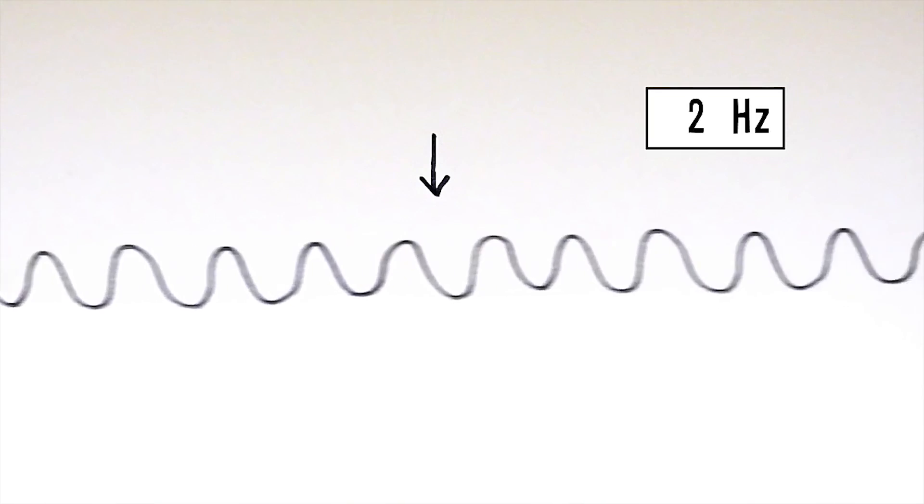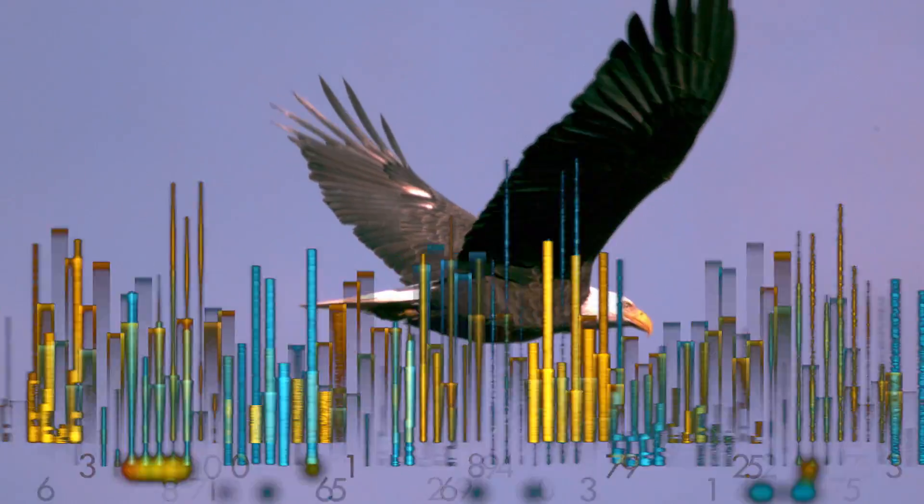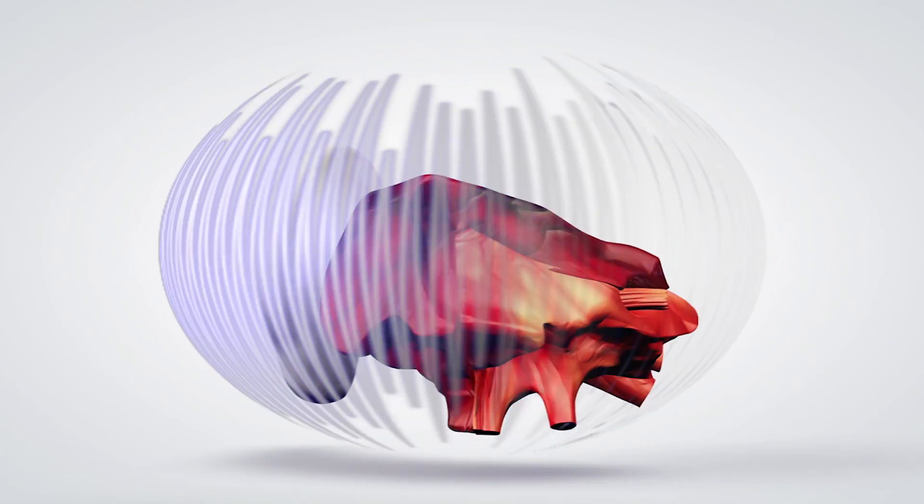By measuring how many cycles occur in a single second, we can determine the sound wave's frequency. This indicates how rapidly or slowly the medium is vibrating as the wave passes through it. Hertz is the unit of measurement for frequency — a single vibration per second is one hertz. Human ears can detect sounds as low as 15 hertz and as high as 20,000 hertz. We refer to these high and low ends as pitch. When you play specific frequencies together, they can create appealing sounds. For instance, if two waves have a frequency ratio of two to one, we call that an octave.